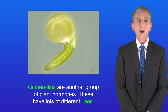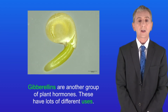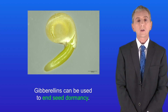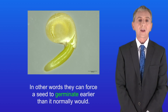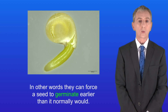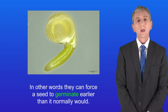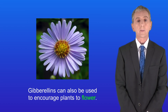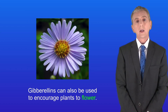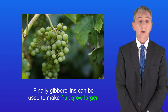Gibberellins are another group of plant hormones and again these have got lots of different uses. Firstly, gibberellins can be used to end seed dormancy — in other words, they can force a seed to germinate earlier than it normally would. Gibberellins can also be used to encourage plants to flower, and finally they can be used to make fruit grow larger.